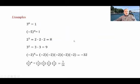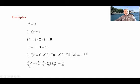Here are a few examples. 3 to the power 0 is 1. Negative 5 to the power 0 is 1. 2 to the power 3 is 2 times 2 times 2, which is 8. 3 to the power 2 is 3 times 3, which is 9 — those are not equal. Negative 2 to the power 5 is negative 2 multiplied 5 times, giving negative 32. One-half to the power 4 is one-half multiplied four times, giving 1 over 16.